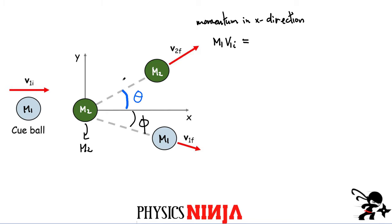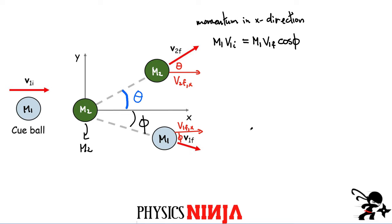After the collision, both objects are moving and each has an x-component of velocity: v1 final in the x-direction and v2 final in the x-direction. For mass m1 the momentum in the x-direction after the collision is m1 times v1 final times cosine of phi. For mass m2, the x-direction momentum is m2 times v2 final times cosine of theta.